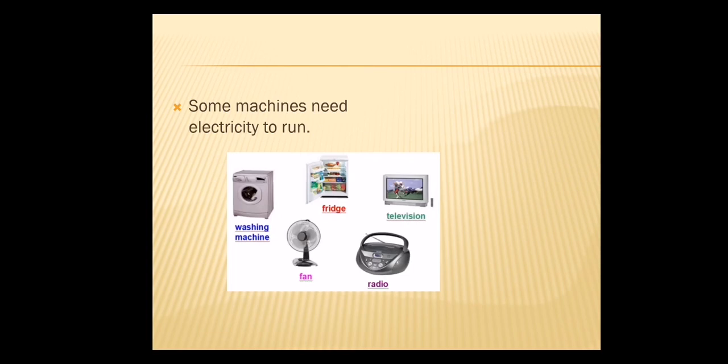Some machines need electricity to run. See this example. First one, washing machine. Second, fridge. Third, television. Fourth, fan. Fifth one, radio. These machines need electricity to run.